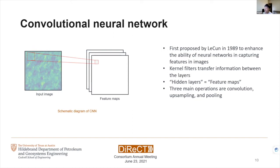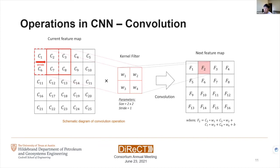Instead of using fully connected layers, convolutional filters transfer information between layers. Also, instead of using hidden layers, in the convolutional neural net they use the term 'feature map', but they are the same concept. In the convolutional neural net there are three main operations: convolution, upsampling, and pooling. Convolution maps the current feature maps to the next feature map through a convolutional filter. In this example we have a filter of 2×2 size, and each grid has its corresponding weight.